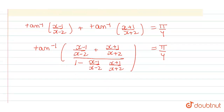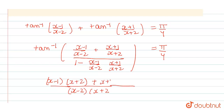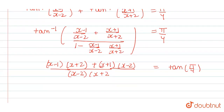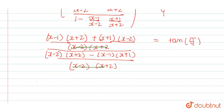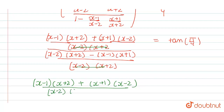So now tan will go to the other side. We will take LCM, which gives x minus 2 into x plus 2 in the denominator. In the numerator we get (x minus 1) into (x plus 2) plus (x plus 1) into (x minus 2), equal to tan of pi by 4. In the denominator we also take LCM: (x minus 2) into (x plus 2) minus (x minus 1) into (x plus 1), divided by (x minus 2) into (x plus 2). The common denominators cancel, and since tan(pi by 4) equals 1, the expression equals 1.